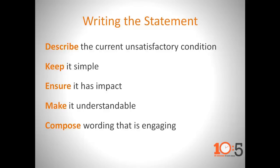This slide describes five key points in writing the problem statement. First, we must describe the unsatisfactory condition. The statement itself needs to be simple — it can be bullet points, it doesn't need to be a book. We have to make sure it has impact, that it's understandable to all readers, and that the wording is engaging. Here's an example: 'We keep missing product shipments' — not too engaging. How about: 'Our customer commitments and relationships are being jeopardized due to our inability to effectively ship product on time.'